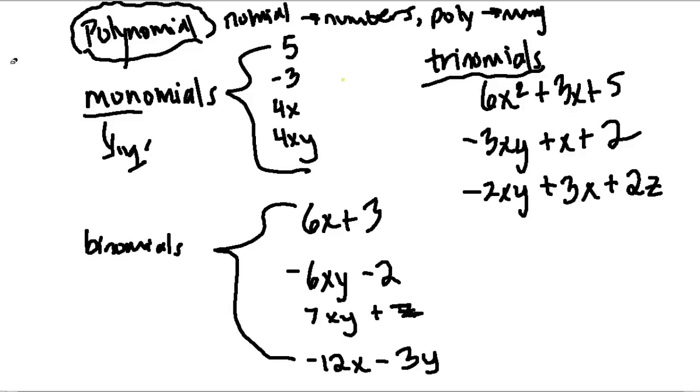Sometimes they want us to identify different types of polynomials. Poly refers to many, and nomial refers to numbers and number types, specifically expressions.